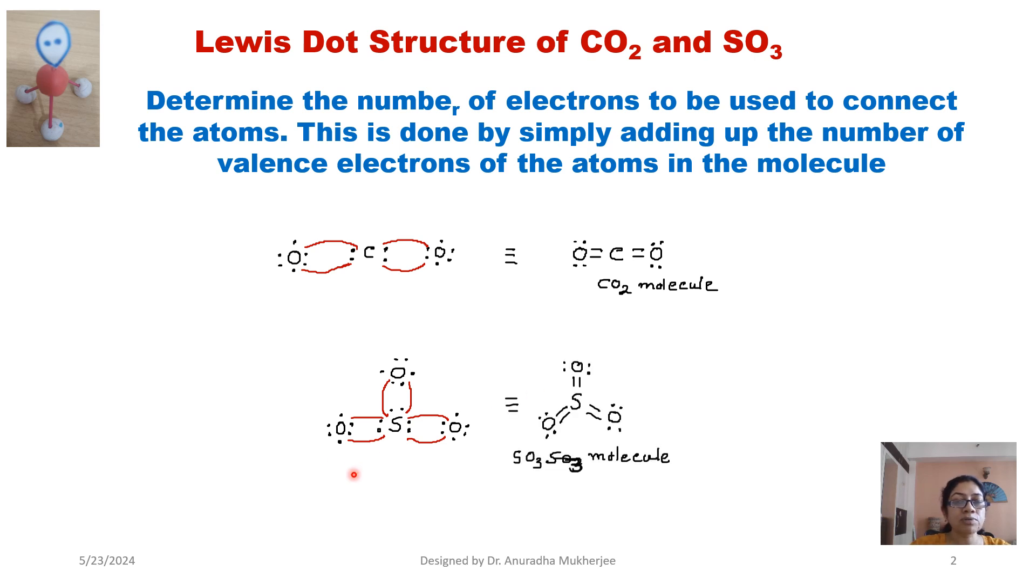So now the structure of sulfur trioxide molecule is sulfur is making three double bonds with the three oxygen atom. So this is SO3 molecule.